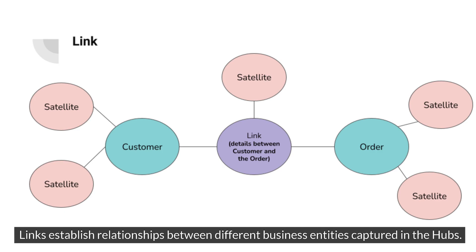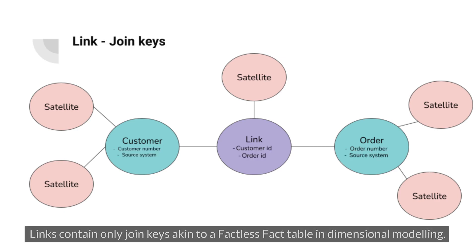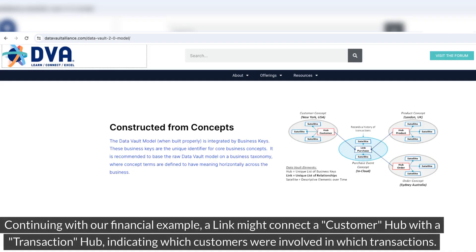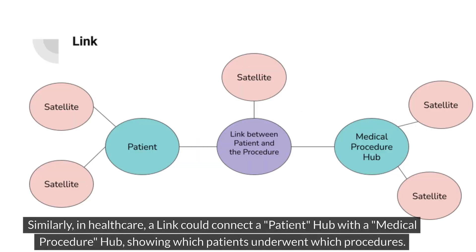Links establish relationships between different business entities captured in the hubs. Links contain only join keys, akin to a factless fact table in dimensional modeling. They lack attributes and solely focus on facilitating connections between entities. Continuing with our financial example, a link might connect a customer hub with a transaction hub, indicating which customers were involved in which transactions. Similarly, in healthcare, a link could connect a patient hub with a medical procedure hub, showing which patients underwent which procedures.